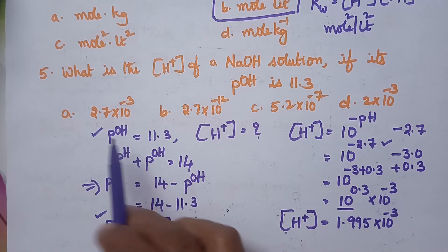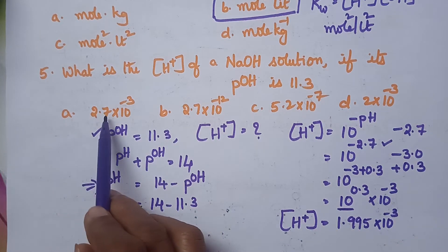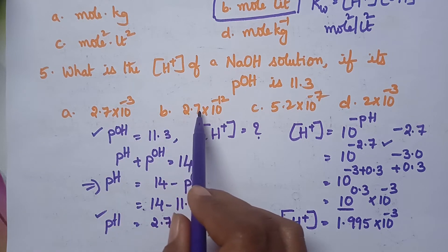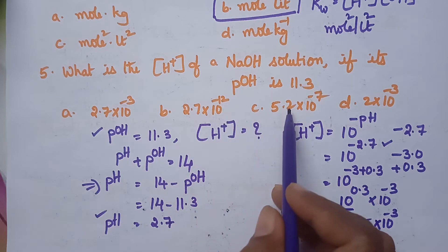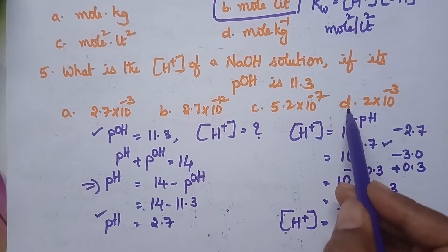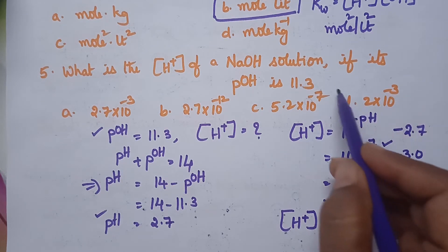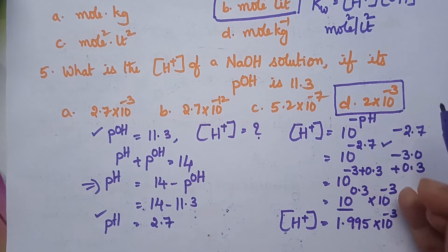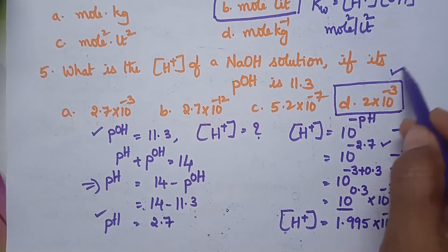Looking at the given options: option A is 2.7 × 10^(−3), option B is 2.7 × 10^(−12), option C is 5.2 × 10^(−7), and option D is 2.0 × 10^(−3). Option D is very close to our calculated answer of 1.995 × 10^(−3), and hence option D is the right answer.